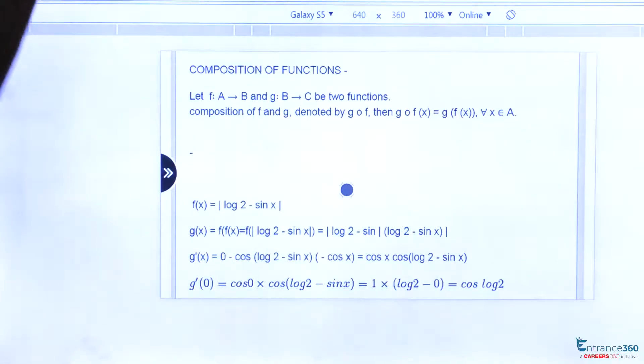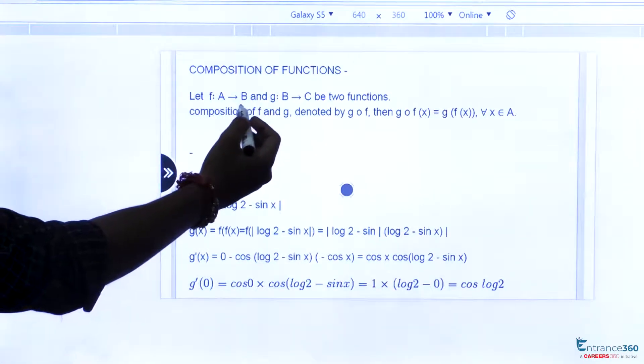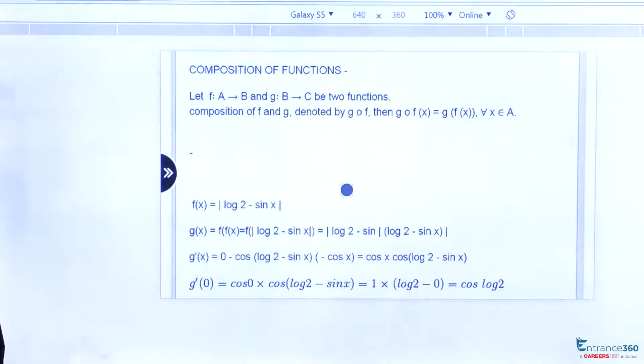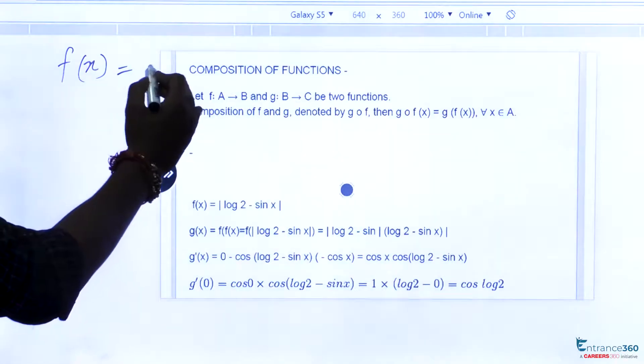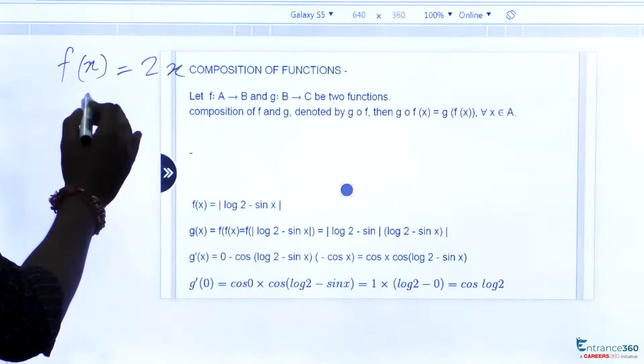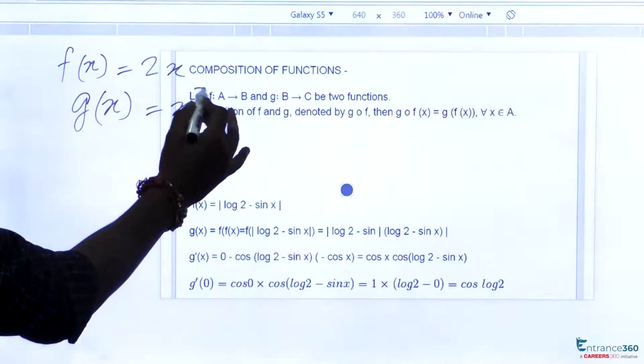Let's suppose we have a function f from A to B and a function g from B to C. Let's suppose a function f(x) equals 2x and a function g(x) equals x squared minus 1.